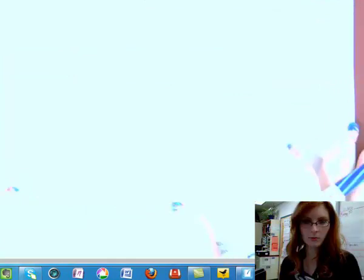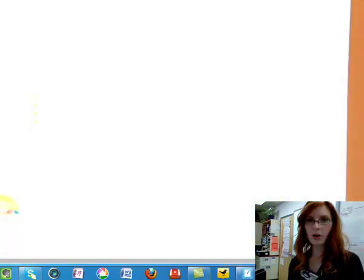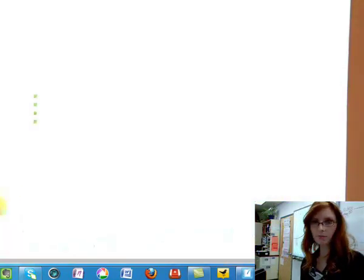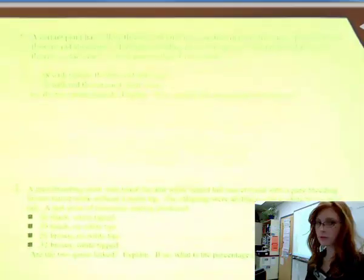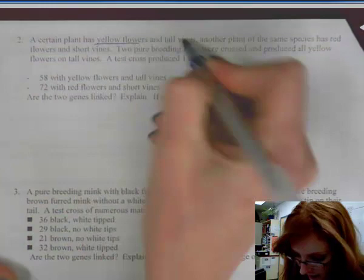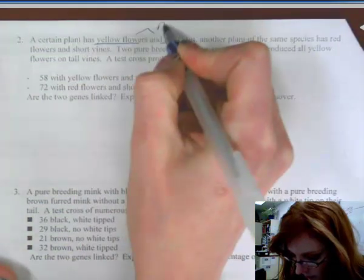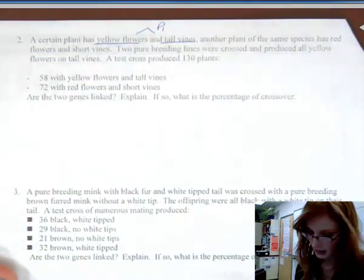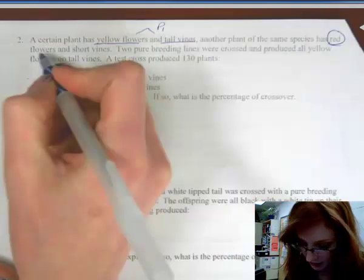Put your hand up if you can solve it before I finish reading the question to you. Don't say anything, just put your hand up if you know the answer. So a certain plant has yellow flowers and tall vines. So there's parent one. Another plant of the same species has red flowers and short vines.